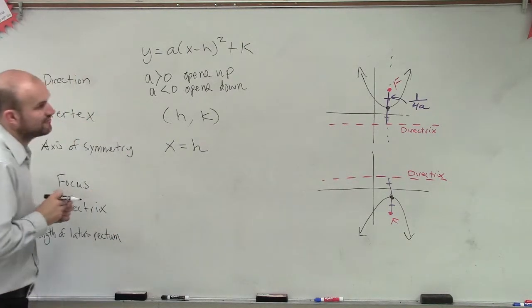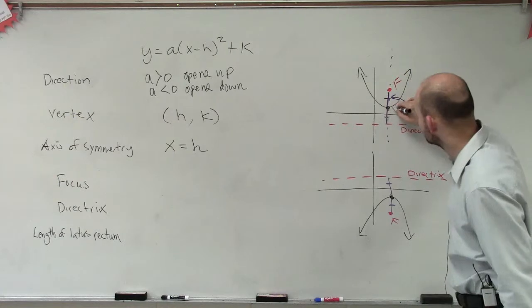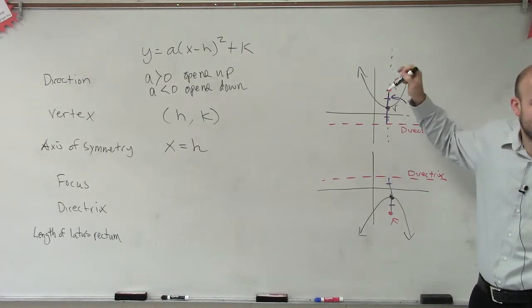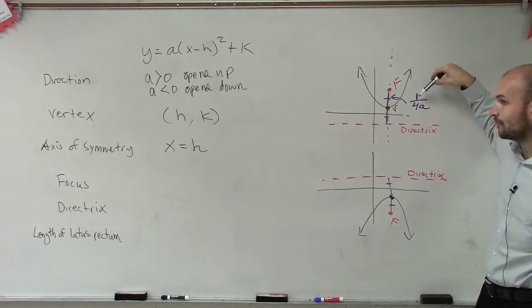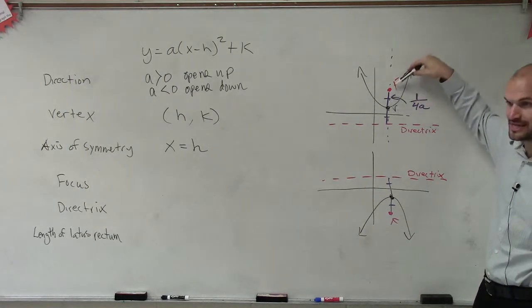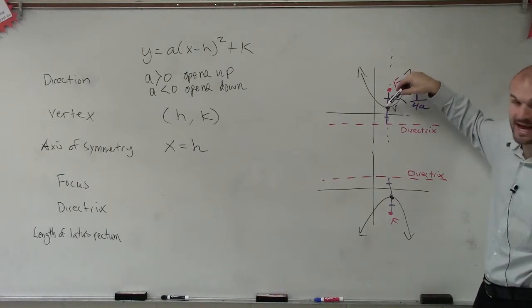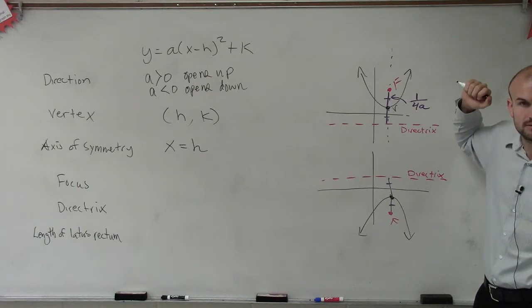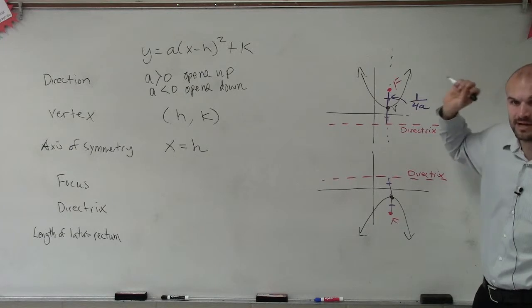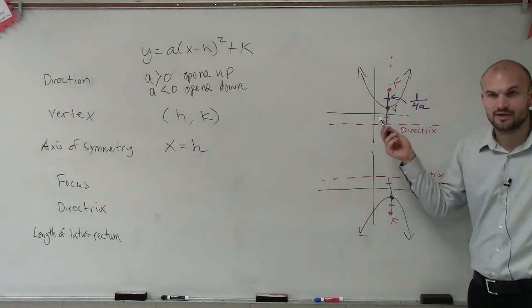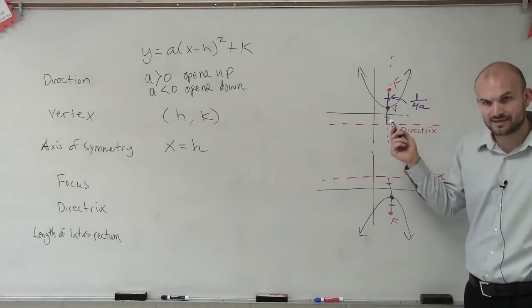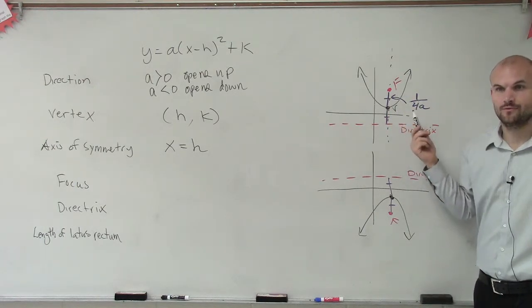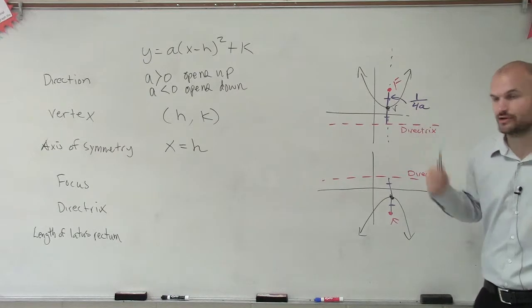Alright? So, if I now want to find my focus, so here's my vertex. If I now want to go up to my focus, what do I need to add? 1 plus 4a, right? Because the distance from the vertex to the focus is 1 plus 4a. The distance from any vertex to your focus is going to be 1 divided by 4a. What I'm trying to say is, if I give you the vertex, and I say find the focus, what do you need to add to your vertex to get to your focus? 1 divided by 4a.